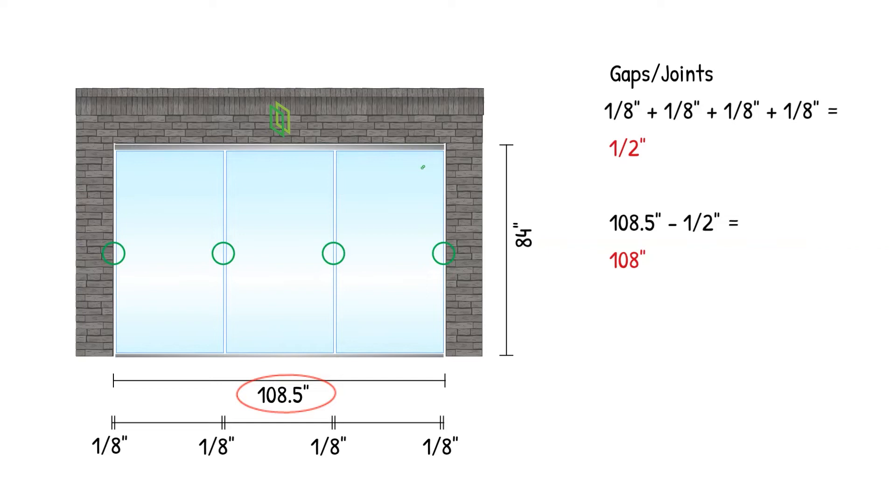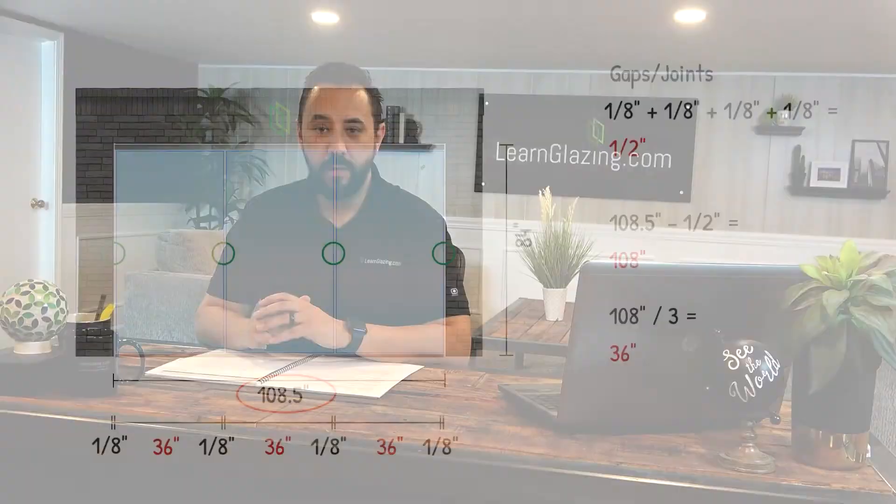Next, we divide that number into three. Now that we have our horizontal glass sizes, it's time to figure out the vertical dimension, and this one is a little different. Remember when I mentioned pocket setting — this is where that's going to come into play.